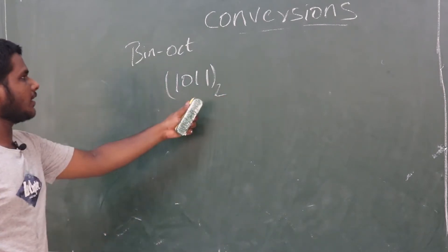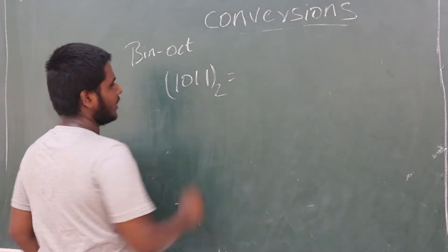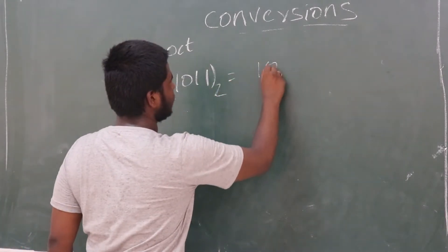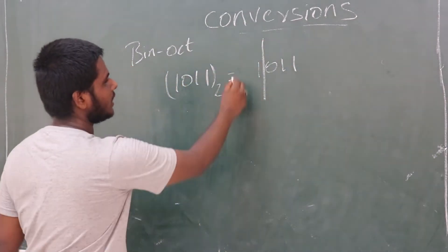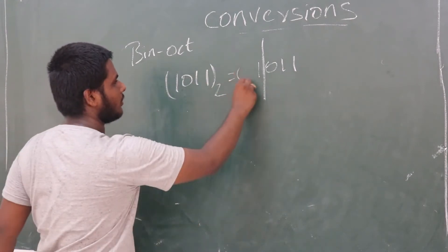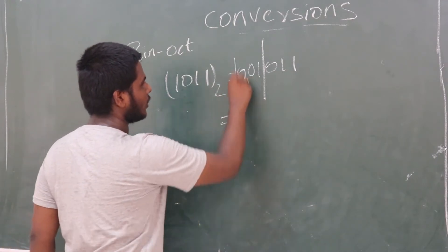This is the binary data. Now, this data is to be divided into 3 parts. So, 1, 0, 1, 1. We divide this into 3 parts. In place of the missing digits, we replace with 0s.